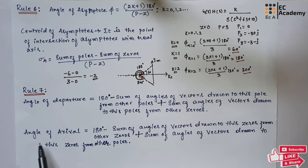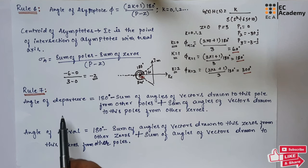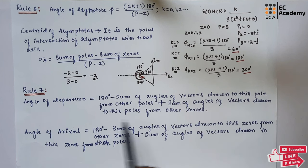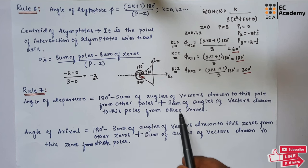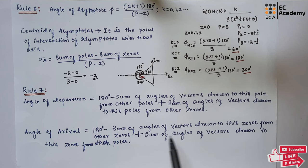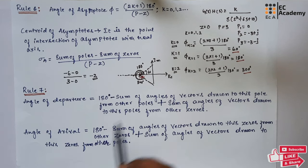Rule 7 is about angle of departure and angle of arrival. The angle of departure equals 180° minus the sum of angles of vectors drawn to this pole from other poles, plus the sum of angles of vectors drawn to this pole from other zeros. The angle of arrival is 180° minus the sum of angles of vectors drawn to this zero from other zeros, plus the sum of angles from other poles. We will understand this rule more clearly when we solve a problem.